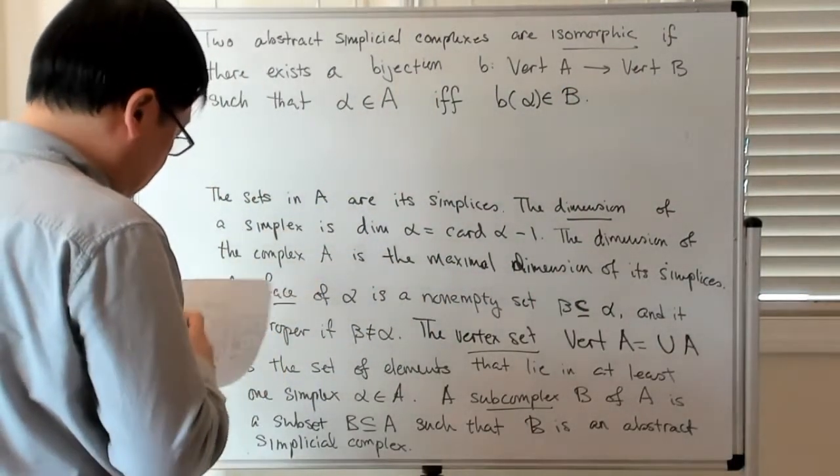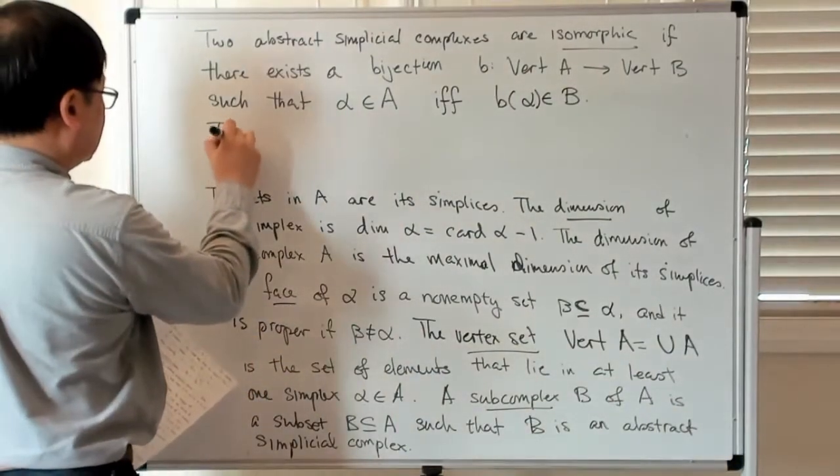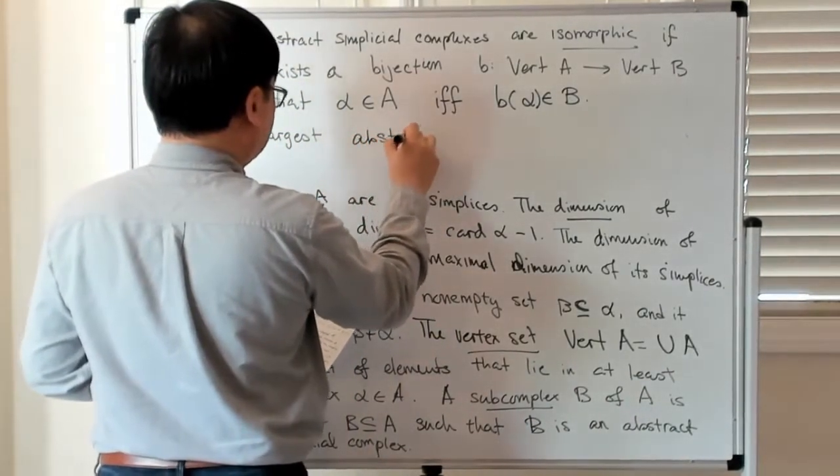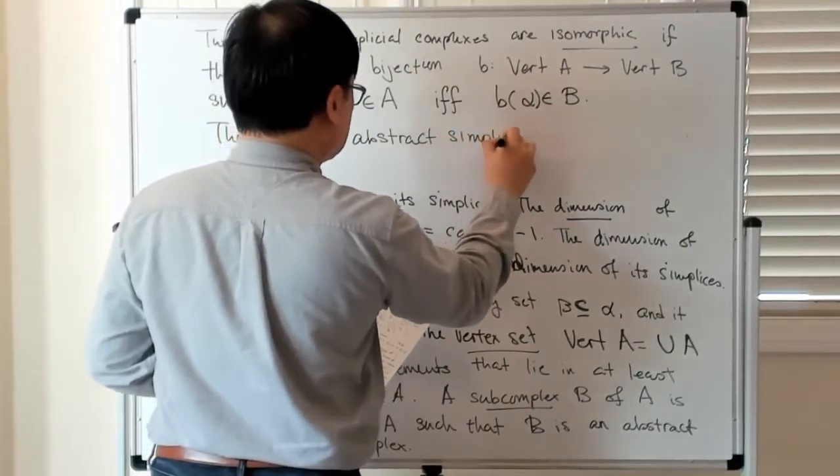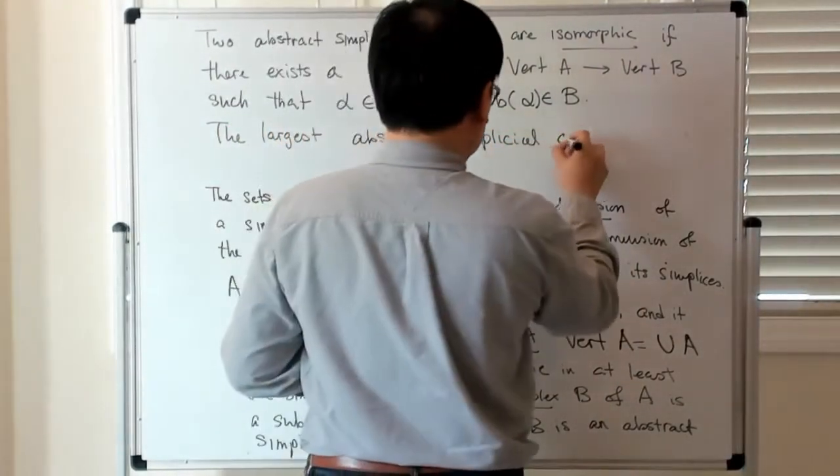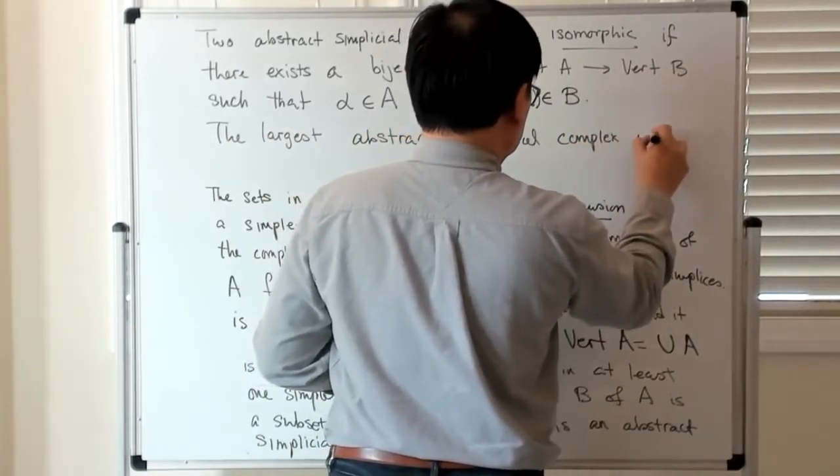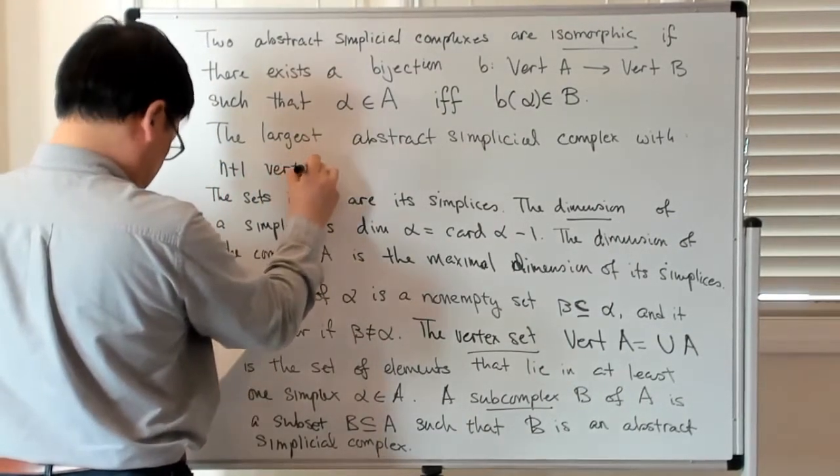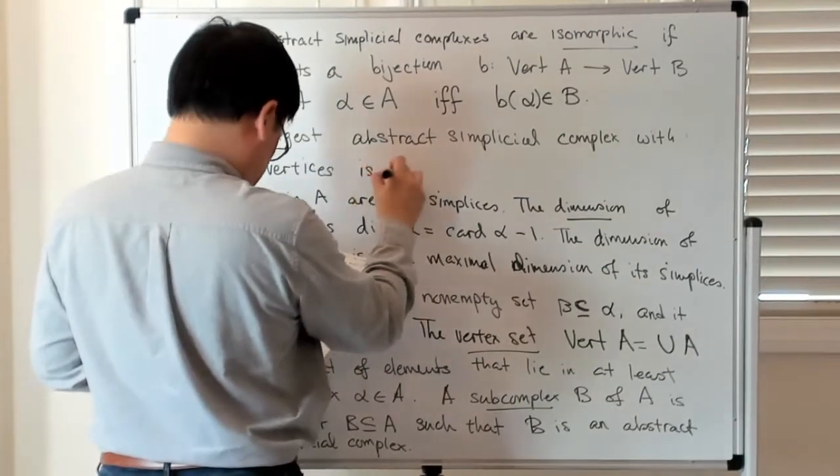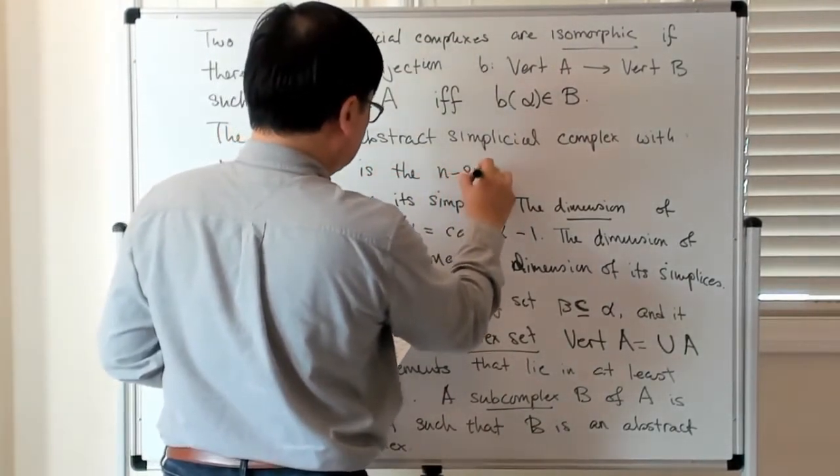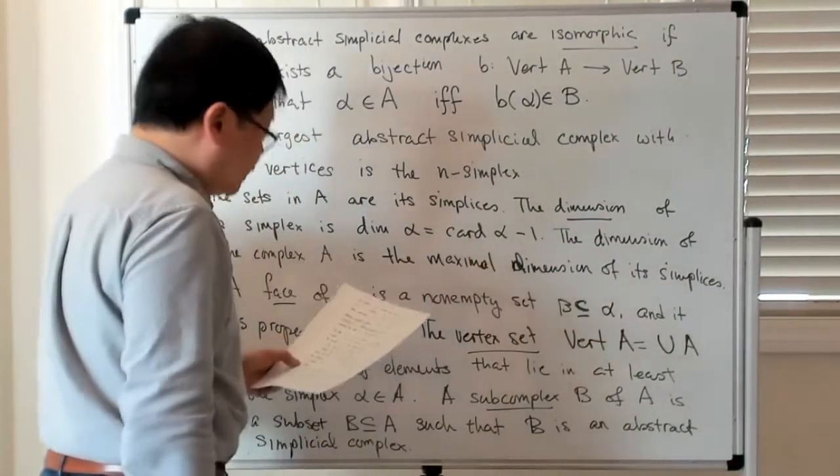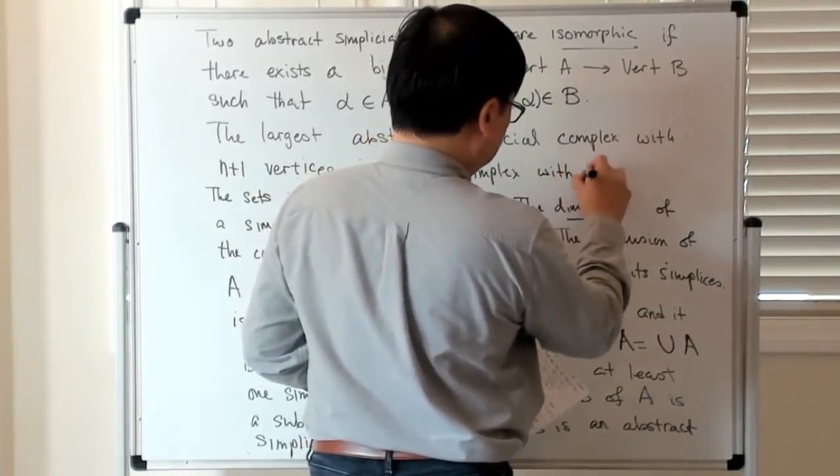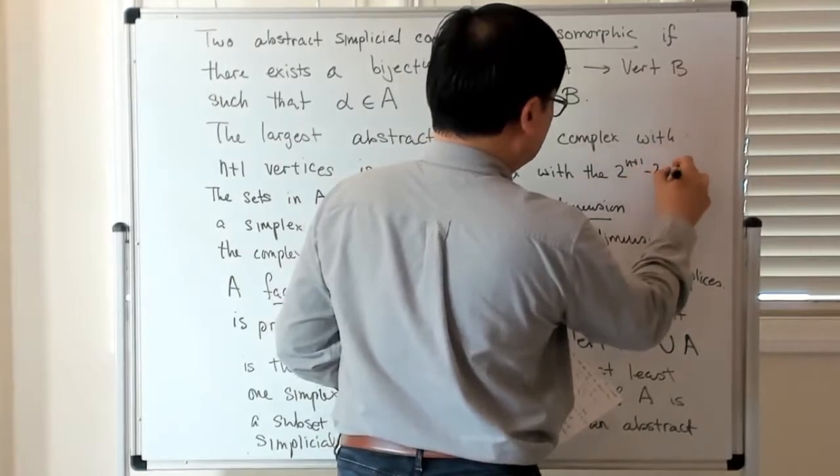The largest abstract simplicial complex you can get with n plus one vertices is the n-simplex together with its 2^(n+1) minus 2 proper faces.